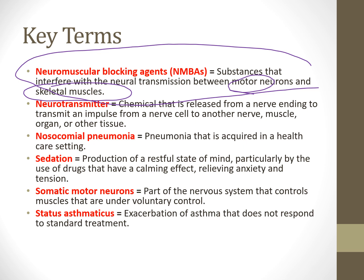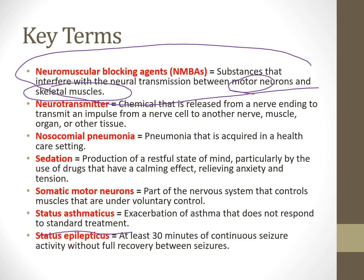Status asthmaticus is a severe exacerbation of asthma that does not respond to standard treatment. Sometimes we have to use neuromuscular blockade agents in these patients to help with appropriate ventilation and oxygenation. Status epilepticus means at least 30 minutes of continuous seizure activity without full recovery between seizures. Could that patient respond to paralytics or phenobarbital? Absolutely. Let's start with a review of the somatic nervous system.